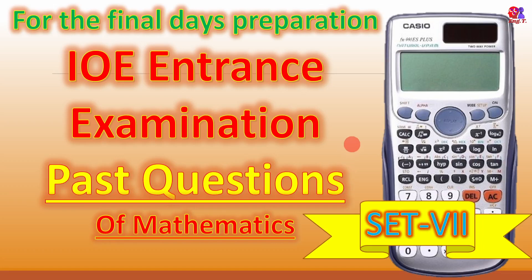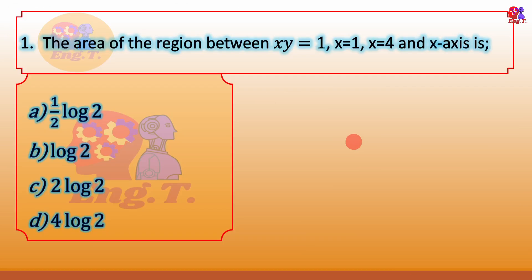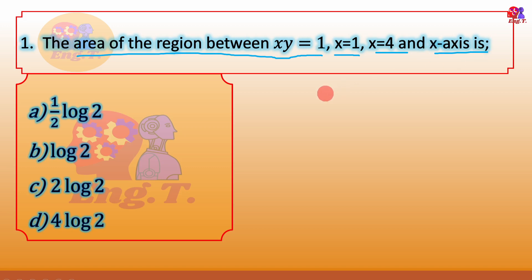We will start with the first step: the area of the region between xy=1, x=1, x=4, and y=x. Any x equal to one is our limit right now. When y goes to one, my x will also — direct integration, learning to get the value.